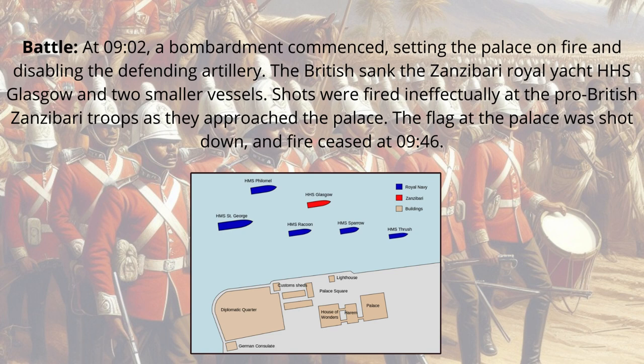At 9.02, a bombardment commenced, setting the palace on fire and disabling the defending artillery. The British sank the Zanzibari Royal Yacht HHS Glasgow and two smaller vessels. Shots were fired ineffectually at the pro-British Zanzibari troops as they approached the palace. The flag at the palace was shot down, and fire ceased at 9.46.